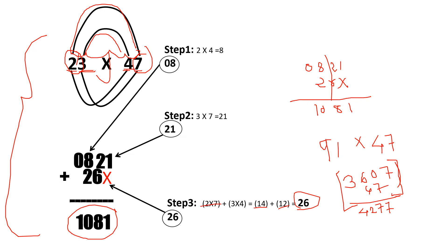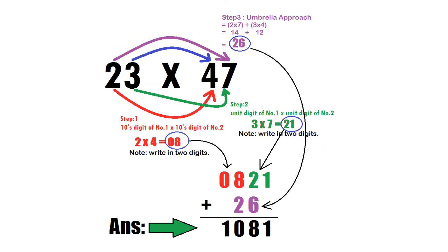Once again, coming back to 23 into 47. And let's revise the question once again. With the color code see. 2 and 4 is multiplied. We'll get 8. We'll write 0 8 over here. And 3 and 7 is multiplied. We'll get 21. We'll write 2 1 like this.